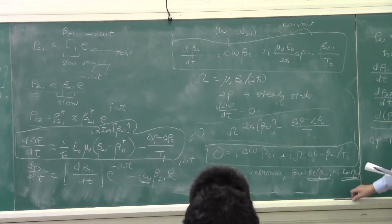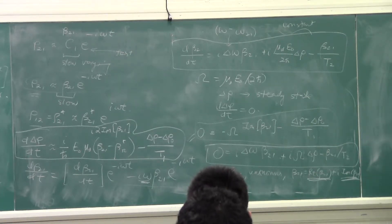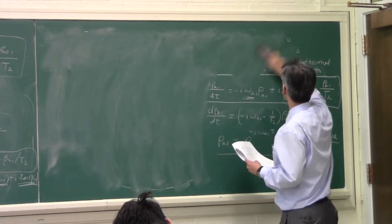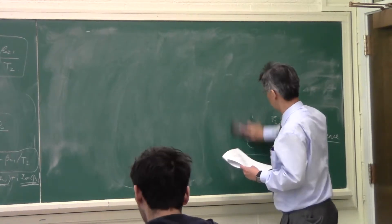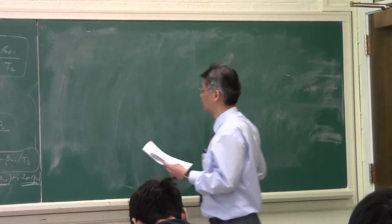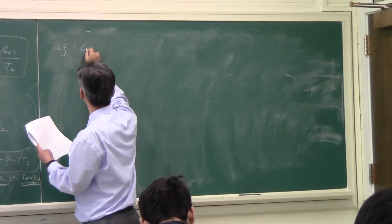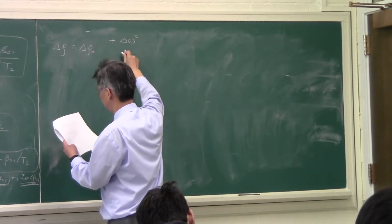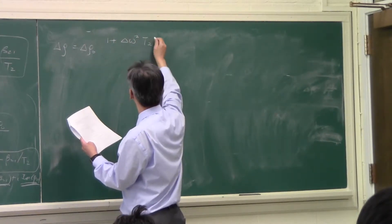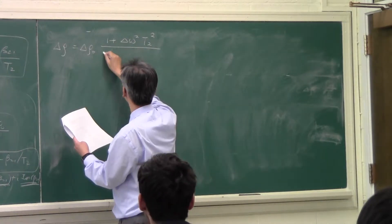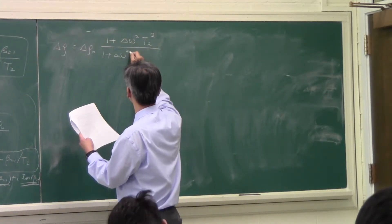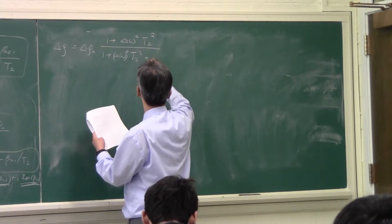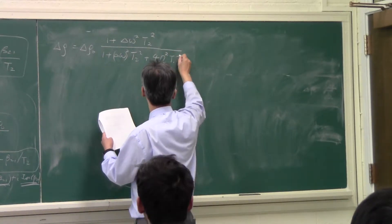I can solve the three equations. The equations are complicated to solve and I will not go through the detail, but just tell you the answer. If you solve for the three unknowns using the three equations that follow from there, you will have the difference in population density equal to the quiescent population density, plus delta omega squared — which is the difference between the exciting frequency and the resonance frequency of the system — so you will have one plus delta omega squared times T2 squared.